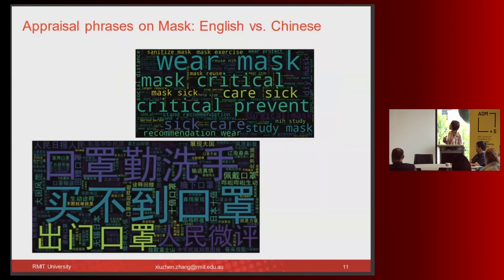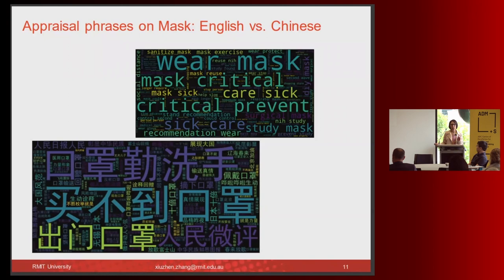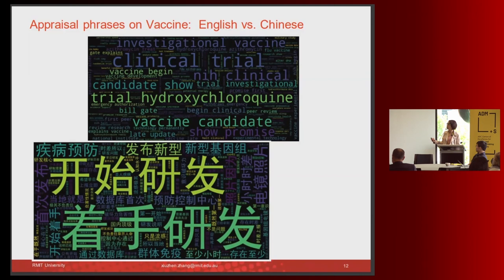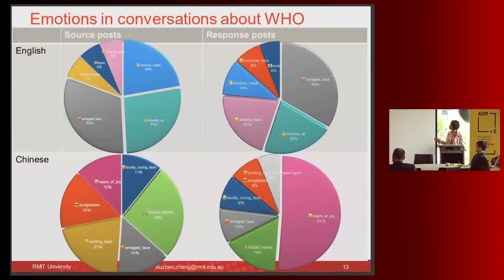On the topic of masks, the English-language community discussed mask-wearing as critical prevention, while the Chinese community also discussed supply access — phrases like 'can't buy masks without a code.' On vaccine topics, both communities showed shared values around clinical trials of vaccine candidates, with Chinese phrases like 'kai shi yanfa' (starting clinical trials) reflecting the same discussion.